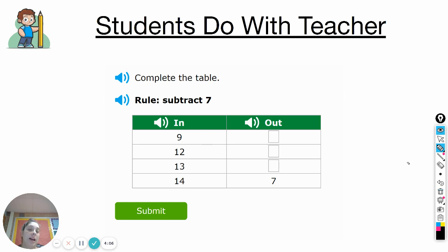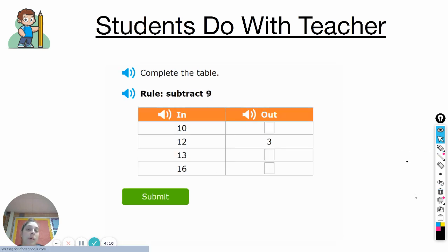Go ahead and erase that. Make a new input output table. We're going to do one more example together. This one is a subtract nine. Draw your input output table and then I want you to fill in these three blanks. The rule is subtracting nine. Go ahead and finish your input output table. Pause the video and then when you're done press play to see if your answers match mine.